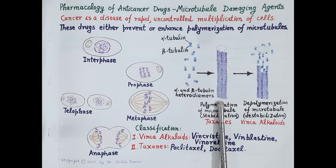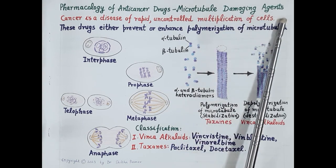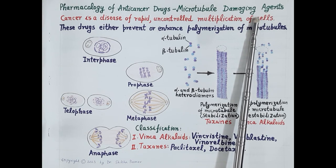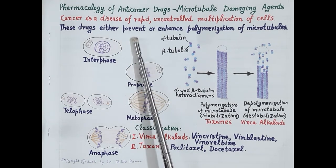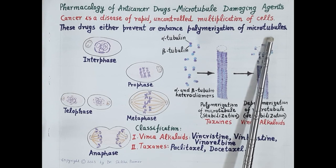Microtubules play a very important role in cell division. In today's video we are going to study the pharmacology of microtubule damaging agents. These are M-phase specific drugs that inhibit the process of mitosis, thereby preventing cell division, cell multiplication, and cell proliferation. These drugs either prevent or enhance polymerization of microtubules.